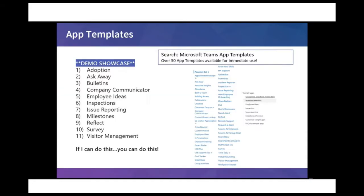For today I'm going to be facilitating a demo showcase of app templates that Microsoft has available to you. If you search for Microsoft Teams app templates, as you can see on the screen, there are a plethora of templates available for immediate use. Most of them link out to GitHub and tell you about the requirements, including any custom connectors that would incur additional cost. Many are free under your base licensing. There are over 50 app templates available right now, and I'm going to cover 11 of them.